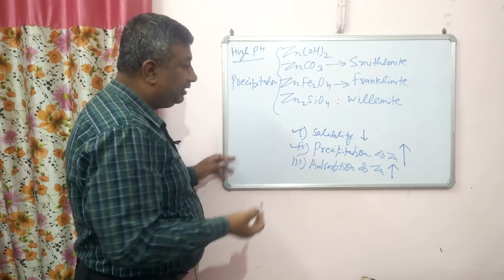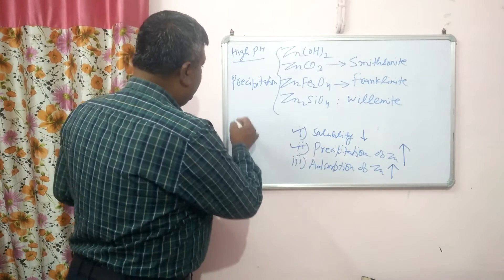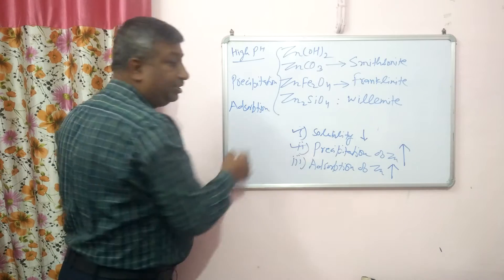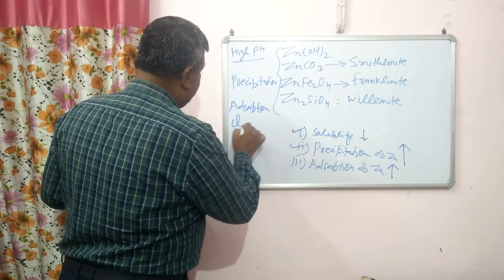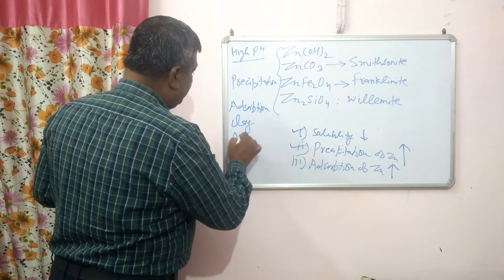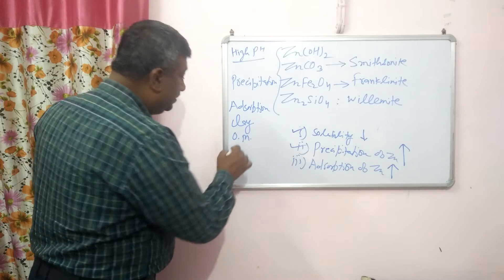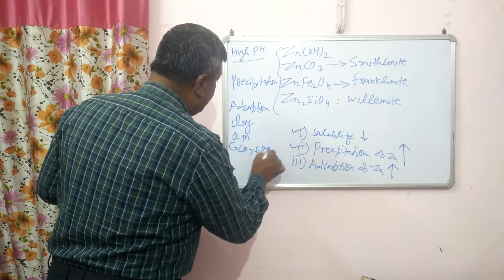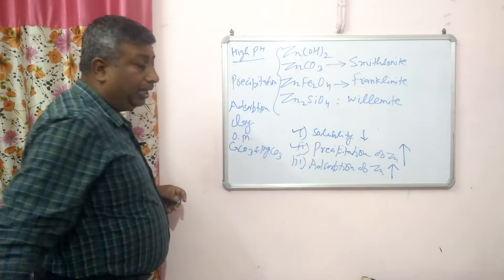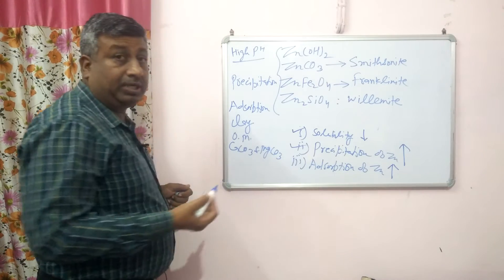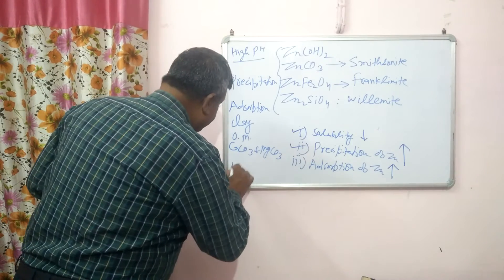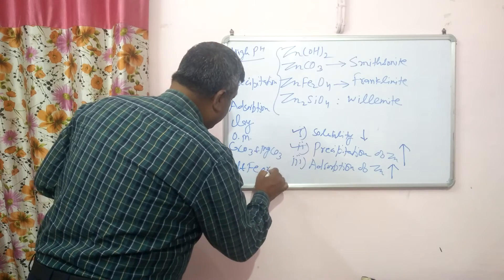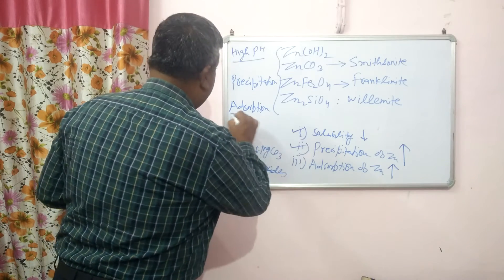The third factor is adsorption of zinc. At high pH, adsorption of zinc increases. Zinc is adsorbed on clay, on organic matter, on calcium carbonate and magnesium carbonate, and also on aluminum and iron oxides. These are the different adsorption surfaces.